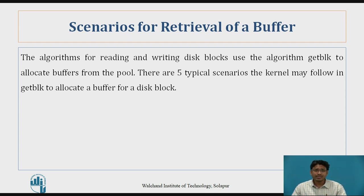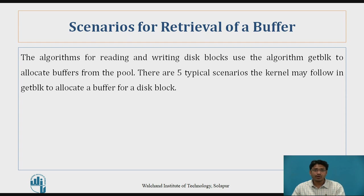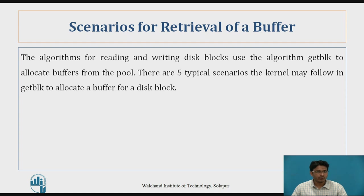While searching, there are different scenarios you need to face. The process will send a request to the kernel, and the kernel will start retrieving the buffer from the free list or from the hash queue. There will be different scenarios — basically, this retrieval of buffer will have 5 typical scenarios.